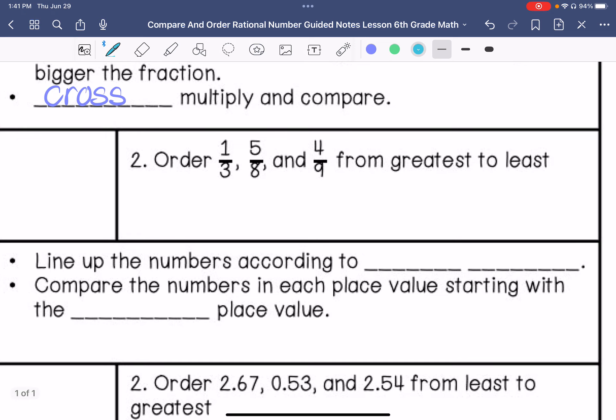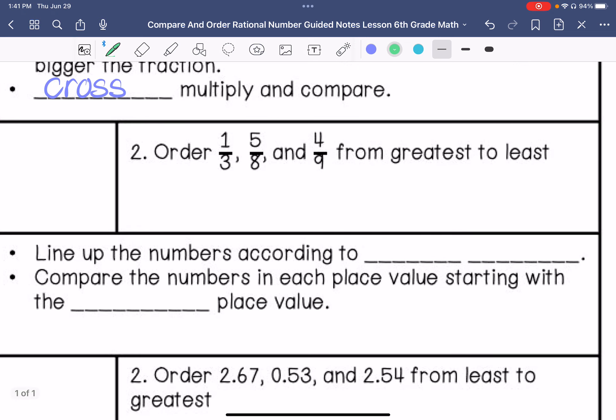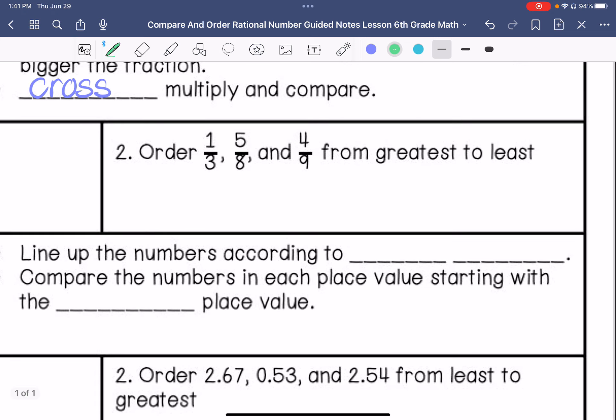Number two says order one-third, five-eighths, and four-ninths from greatest to least. I'm going to make sure that they have a common denominator. So eight times nine is seventy-two, and I think three goes into seventy-two. Twenty-four.